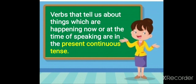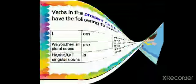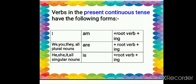Verbs that tell us about things which are happening now or at the time of speaking are in the present continuous tense. Verbs in the present continuous tense have the following forms: With I, we will always use 'am' plus root verb plus -ing. With we, you, they, all plural nouns, we will use 'are' plus root verb plus -ing.